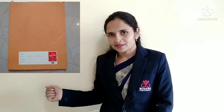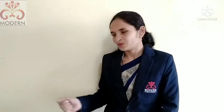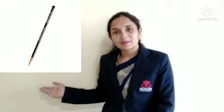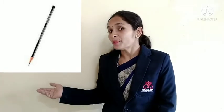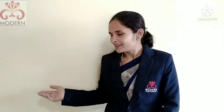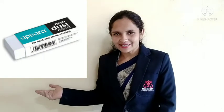Then look, this is a box-line notebook. Now you know: four-line notebook and box-line notebook. What is this? This is a pencil. Then look, this is an eraser.